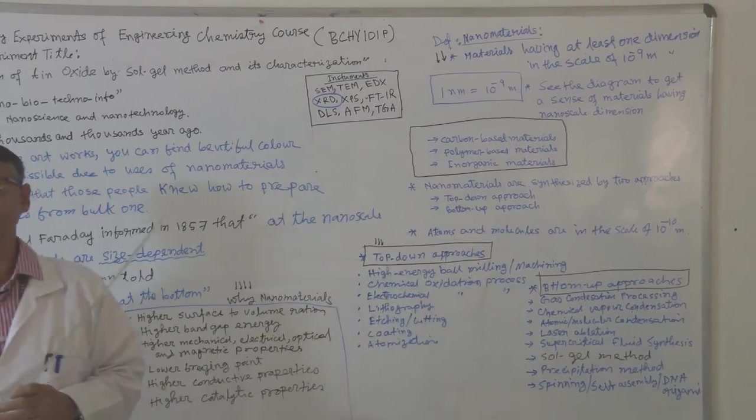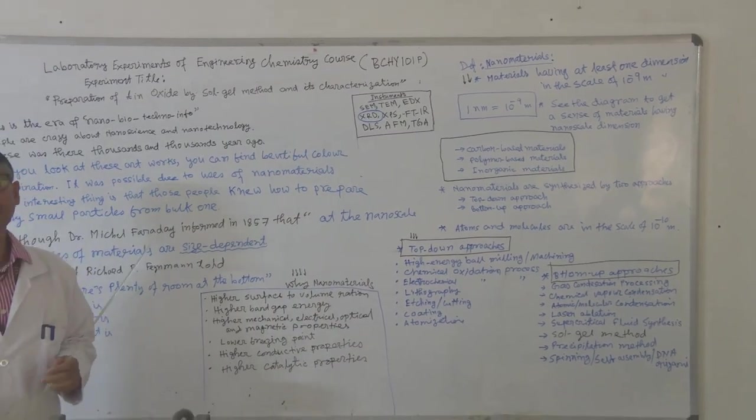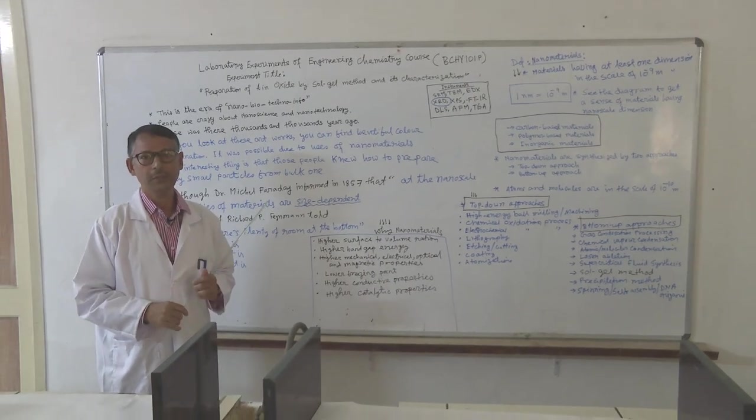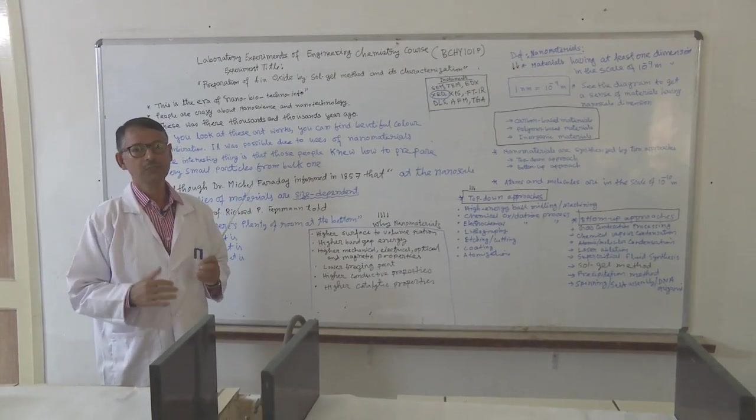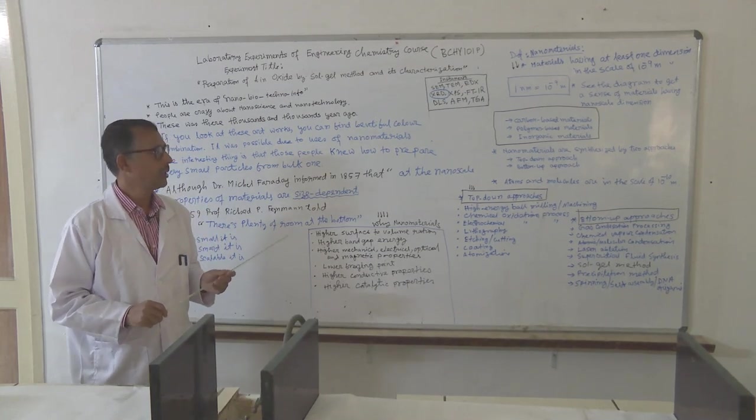Now if you think about our atoms and molecules, they are in the scale of 10 to the minus 10 meters. That means it is 10 times smaller than the nanomaterials.